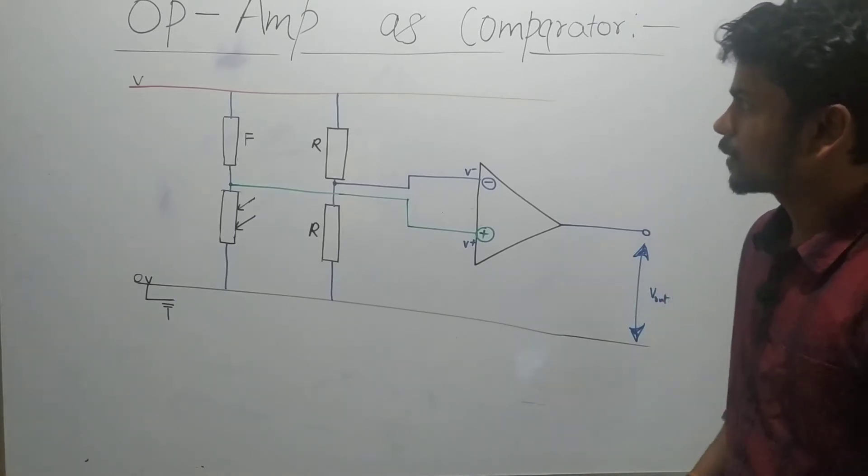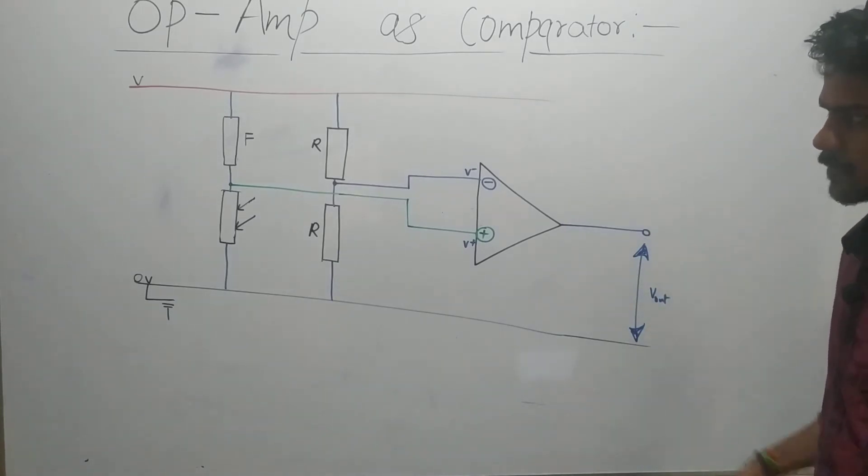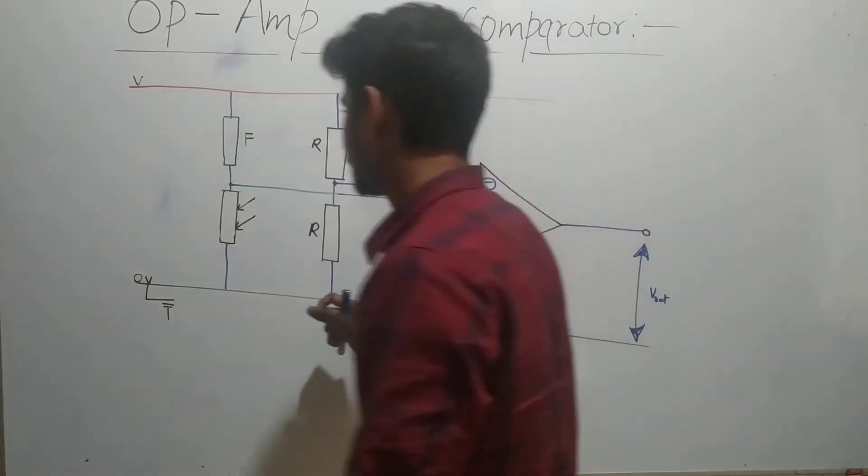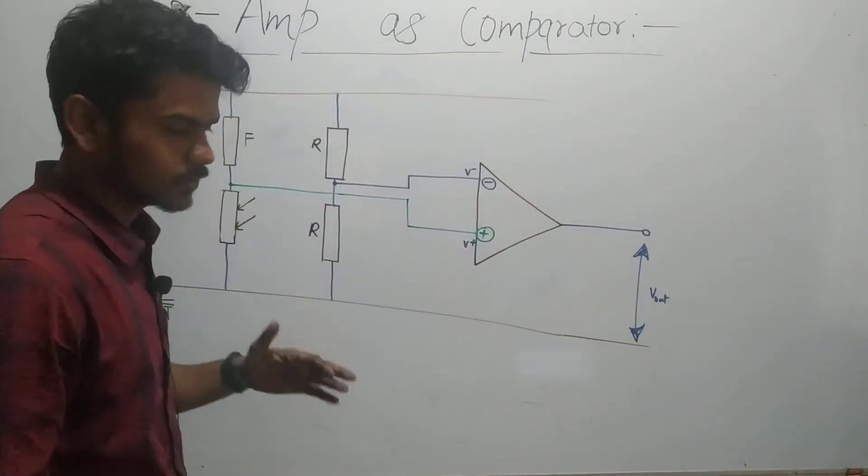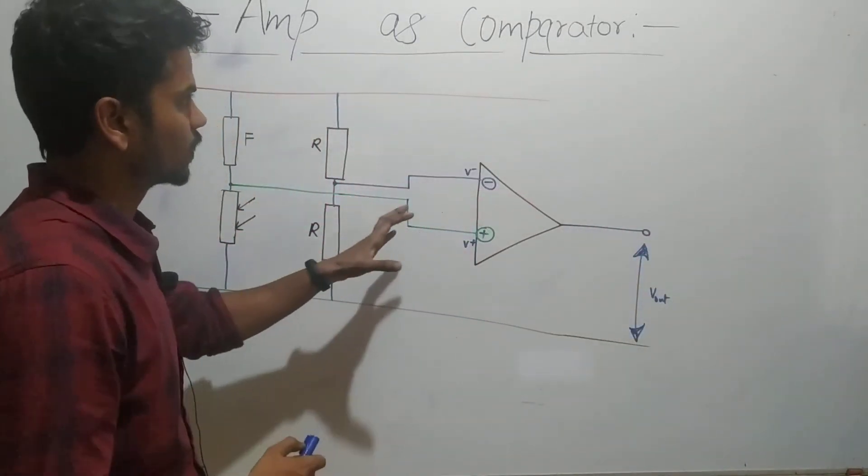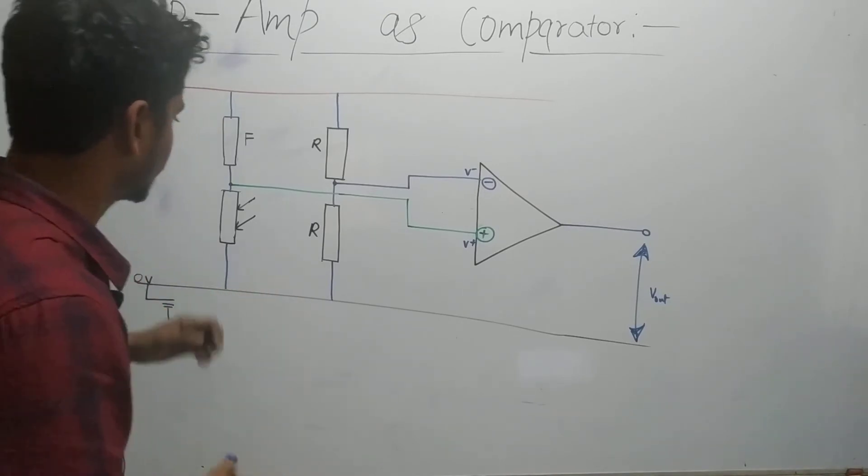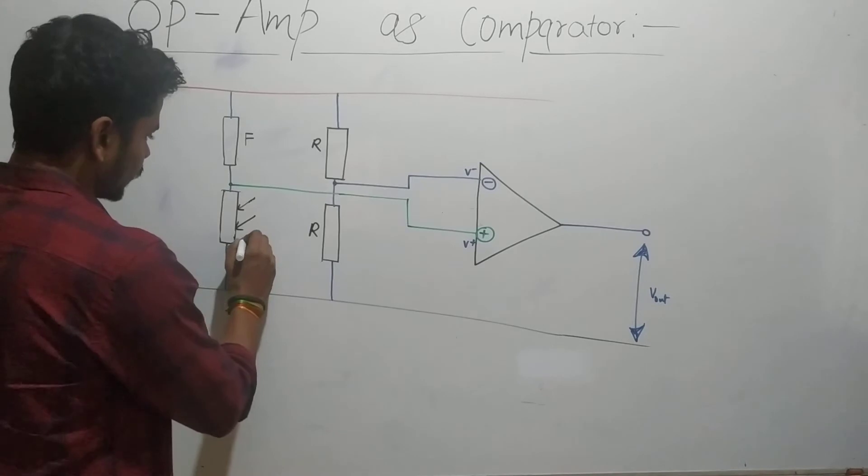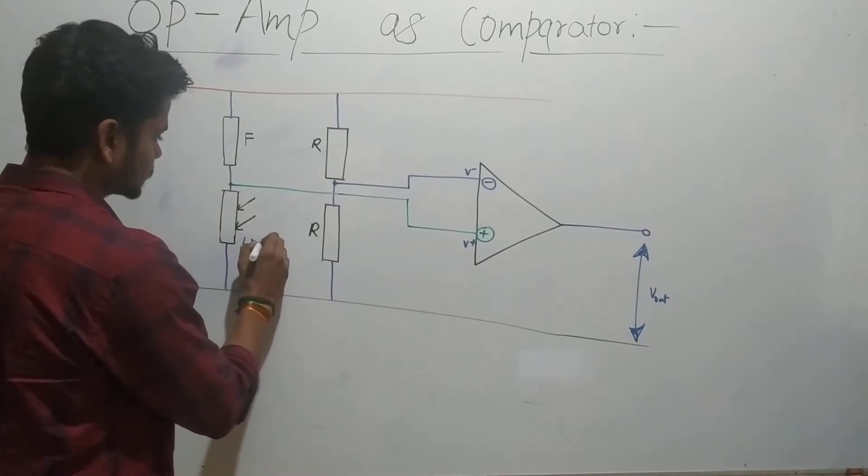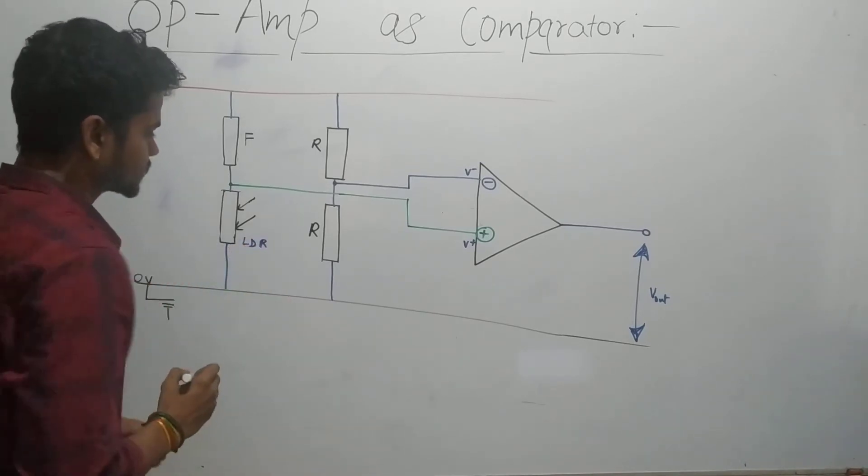In this video we will be talking about op-amp as a comparator, how we can compare a given input, whether it is high or low, using an op-amp. This setup is a particular example where we have a light detecting sensor, a light detecting resistor.